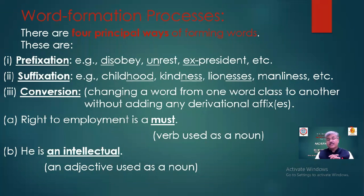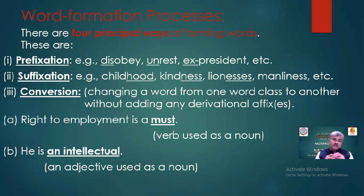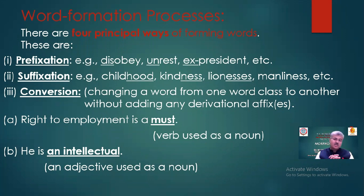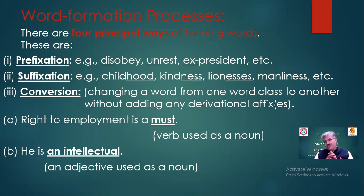Examples of suffixation: child → childhood, kind → kindness, lion → lioness, man → manliness. The third type of word formation is conversion — changing a word from one class to another without adding any derivational affix. For example, 'must' is a verb, but in the phrase 'right to employment is a must', it is used as a noun.